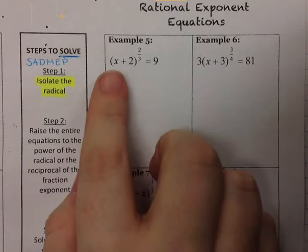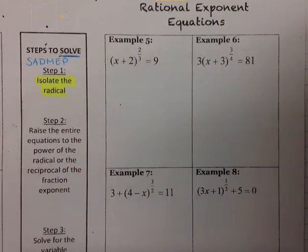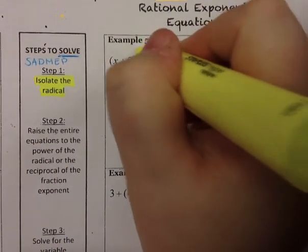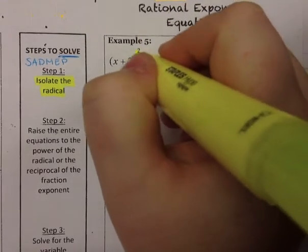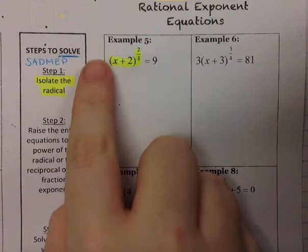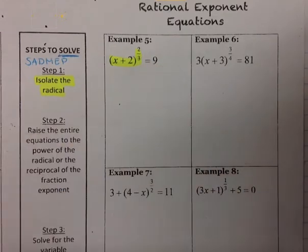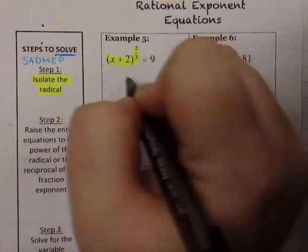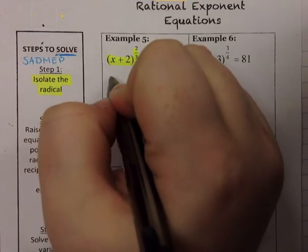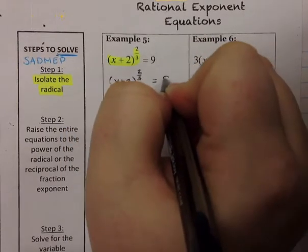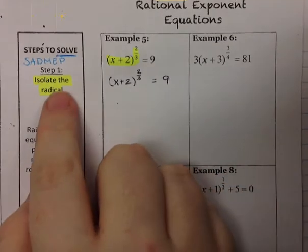Our first example is (x+2) raised to the 2/3 equals 9. I'm going to highlight what needs to be isolated. The fraction exponent is what you start with, and whatever it is attached to needs to be isolated — so that entire (x+2) needs to be isolated with the exponent. There's nothing on either side of the highlight except the equals sign, so step 1 is done — it has been isolated.